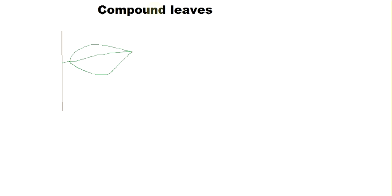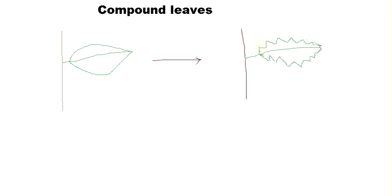What happens when a leaf has incisions? Here we have a leaf with incisions, as we can see. This is not uncommon — many types of plants have many designs, and botanists have given different names to each of them. So that is what an incised leaf looks like.